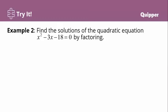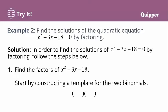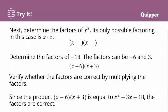Next, find the solutions of x squared minus 3x minus 18 equals zero by factoring. To solve, first find the factors of x squared minus 3x minus 18. Construct a template for two binomials, then determine the factors of x squared — we have x and x. Determine the factors of negative 18: they can be negative 6 and positive 3, since these two factors multiply to negative 18 and their sum equals negative 3. Verify by multiplying: the product of (x − 6) and (x + 3) equals x squared minus 3x minus 18, so the factors are correct.